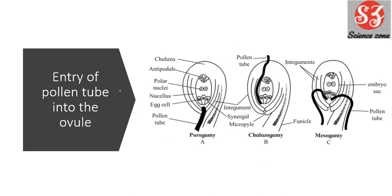Next is entry of pollen tube into ovule. There are three types of entry: porogamy, where entry is through the pore; chalazogamy, where entry is through the chalaza; and mesogamy. These are three types of pollen tube entry. This diagram can be asked, or the question can be 'explain the three types of entry of pollen tube into ovule,' and this gives you the answer with three diagrams.